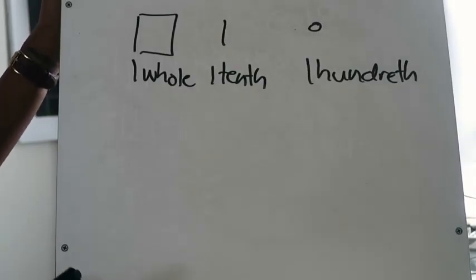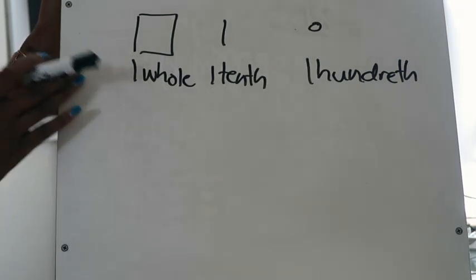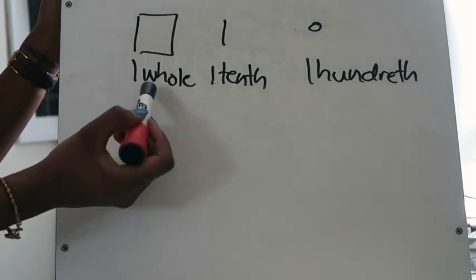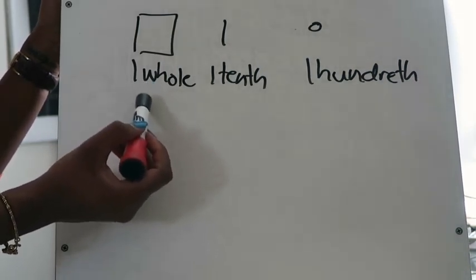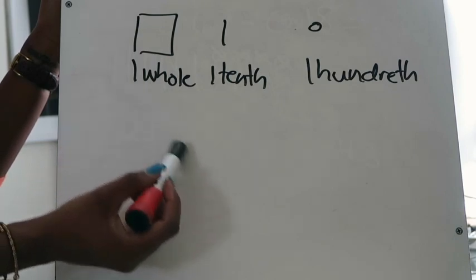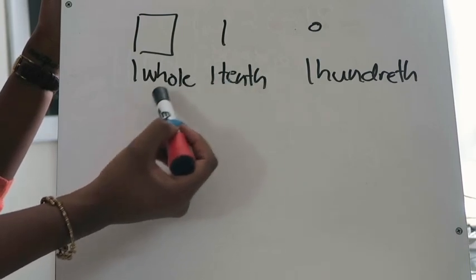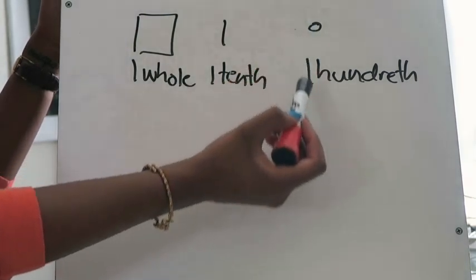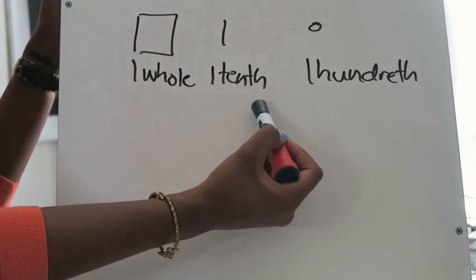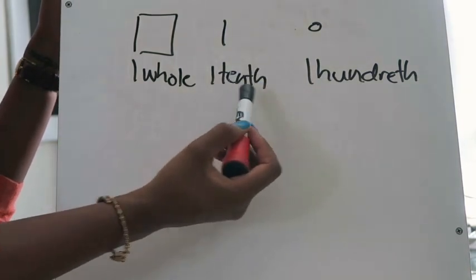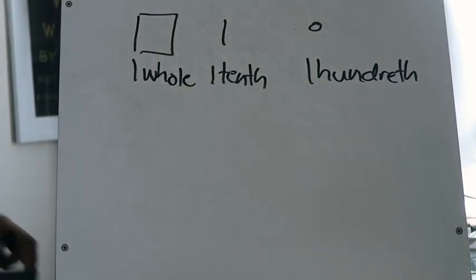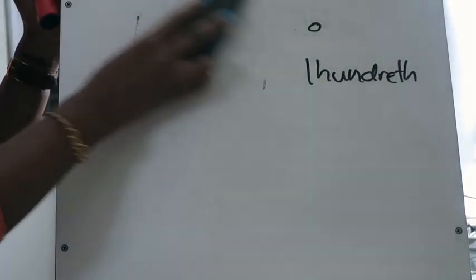Before we go into drawing the quick picture to add, let's remember our base 10 block pieces in our quick pictures. This square represents one whole number — anytime you see that, it represents one whole. This little stick represents one tenth, which is less than a whole, and there are ten tenths in one whole. This little circle represents a hundredth, which is less than a tenth, and there are ten hundredths in one tenth. We'll need to keep that in mind not just for today's lesson but for any time you're adding or subtracting decimals. So let's look at our first example.